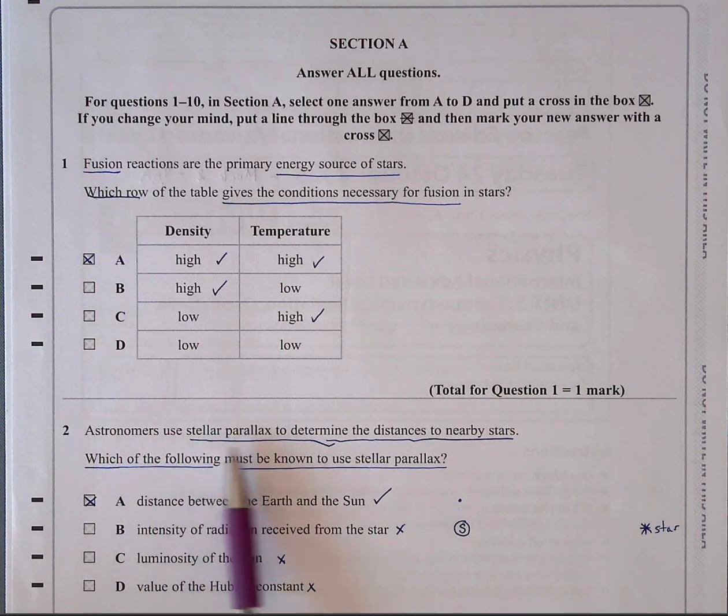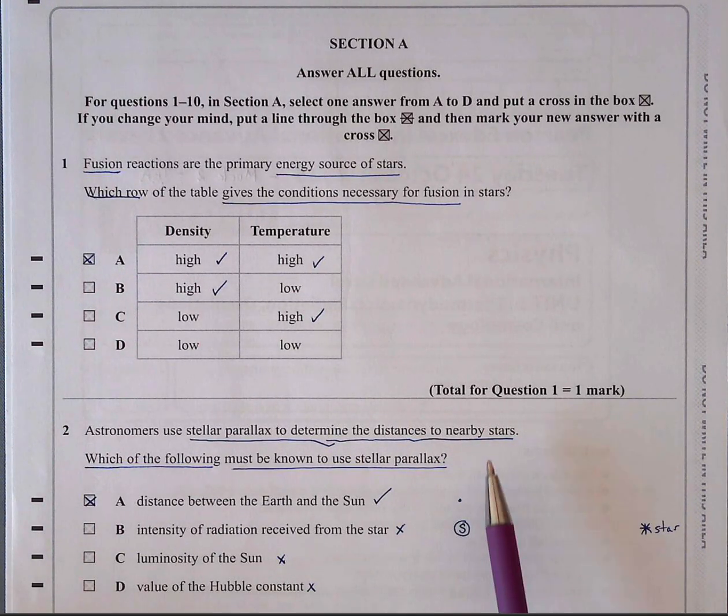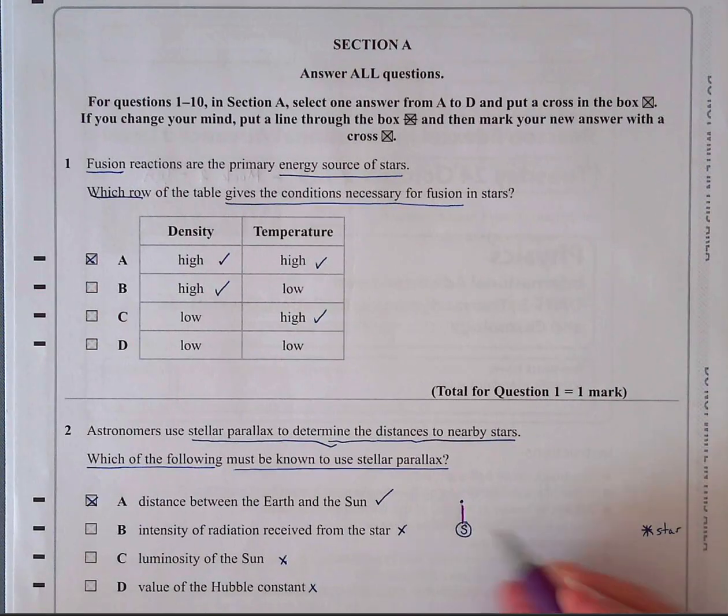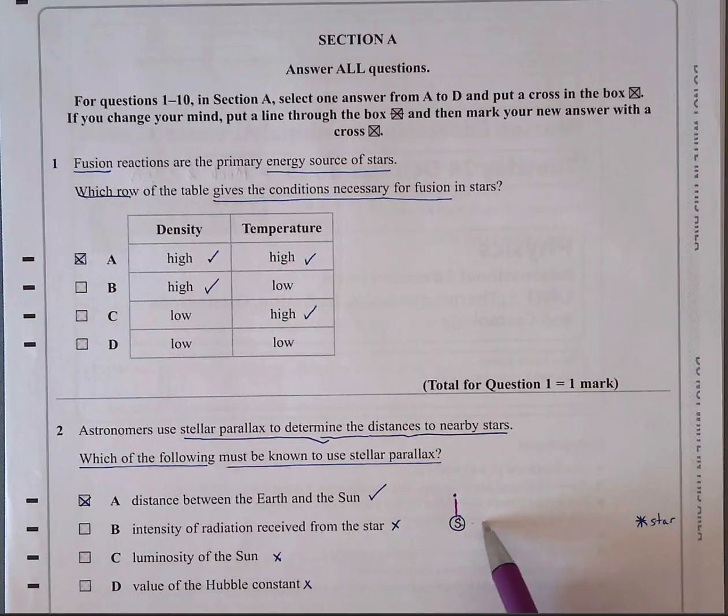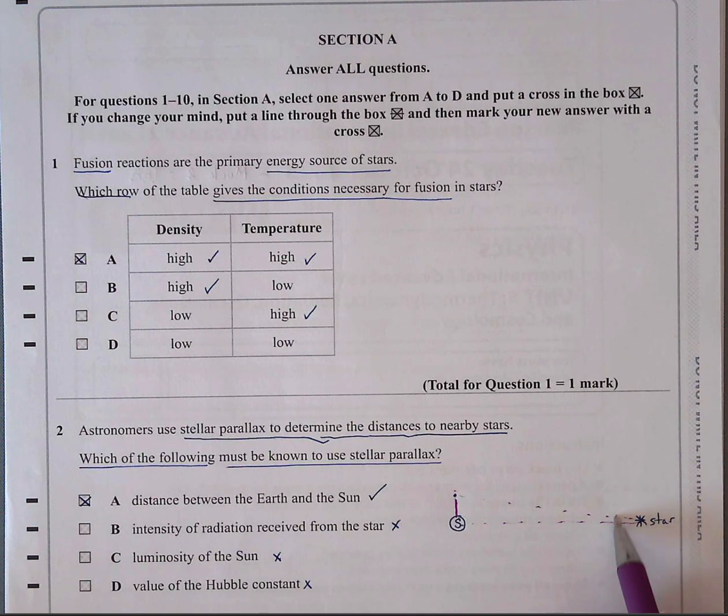Astronomers, number two. Astronomers use stellar parallax to determine the distances to nearby stars. Now, by nearby they mean relatively nearby, not in very distant galaxies. Which of the following must be known to use stellar parallax? Well, the answer is A. You basically use the distance between the Earth and the Sun. So you have the Earth here, the Sun there, the distant star there. We know this distance. And you use the angle.